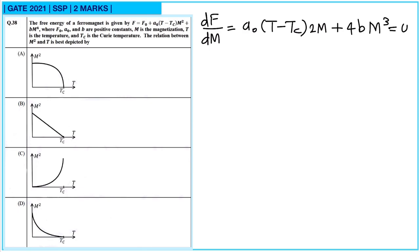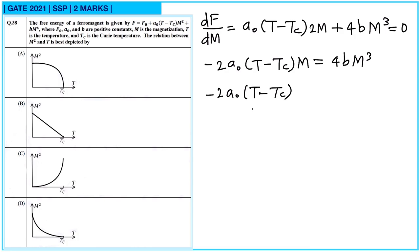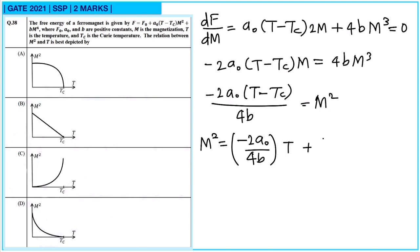From dF/dM = 0, we get −2A0(T − Tc)M = 4BM³, which simplifies to M² = −2A0(T − Tc) / 4B. Rearranging: M² = (−2A0/4B)T + (2A0Tc/4B). This is of the form y = mx + c — a straight line in M² vs T with a negative slope. So option B is correct.